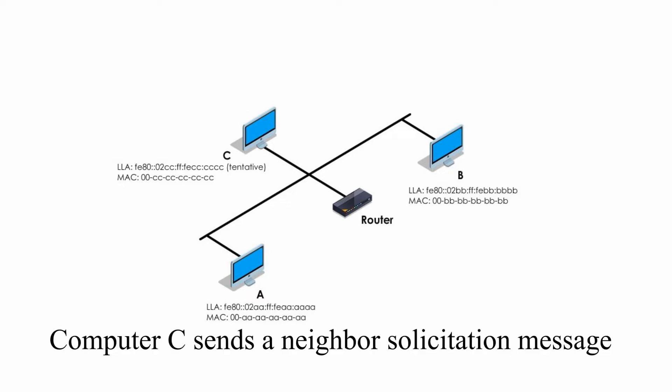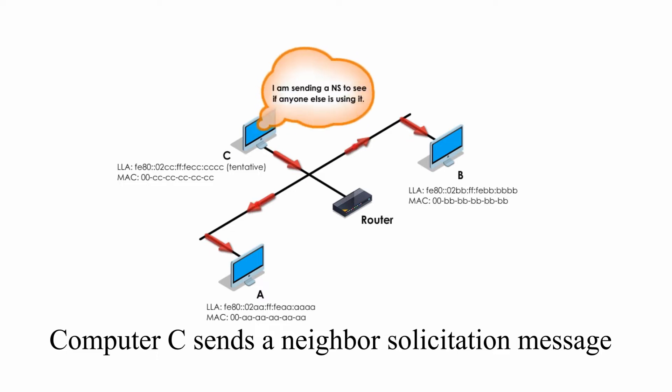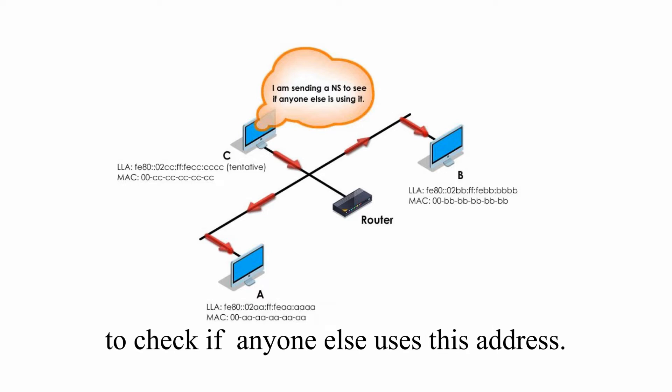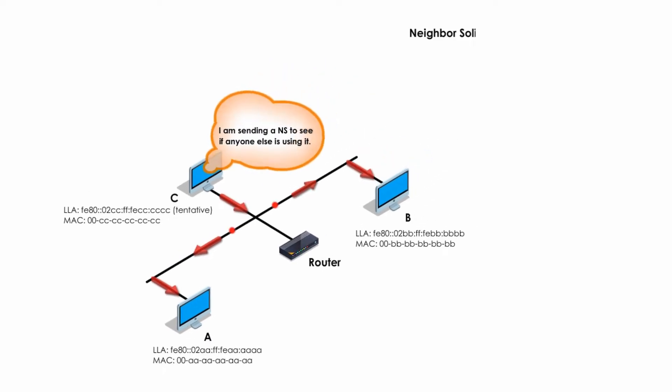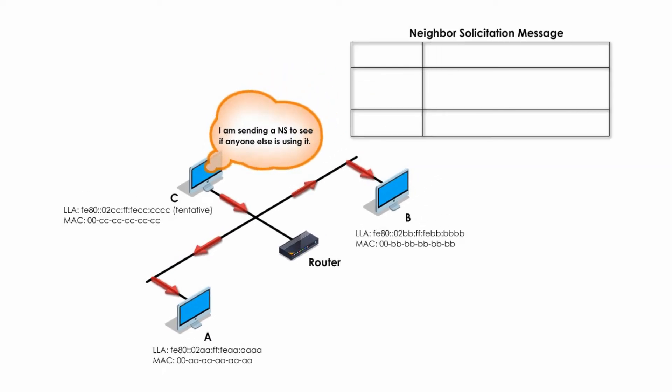Step 2: Computer C sends a neighbor solicitation message to check if anyone else uses this address already. Let's check out what information is inside this neighbor solicitation packet. To keep it simple, we only talk about some important information.